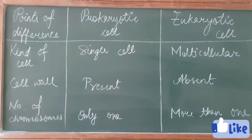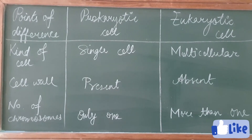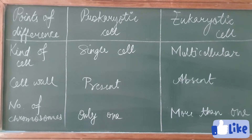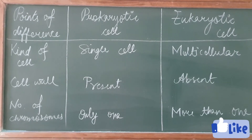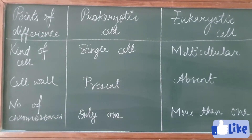The next point of difference is cell wall. In prokaryotic cell, cell wall is present, while in eukaryotic cell, cell wall is absent.